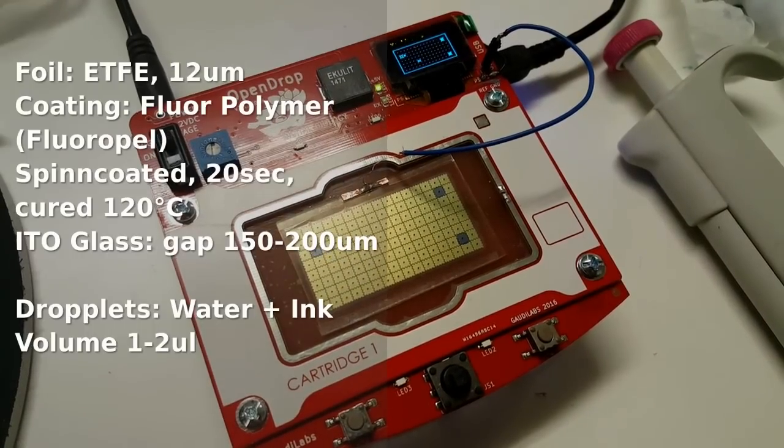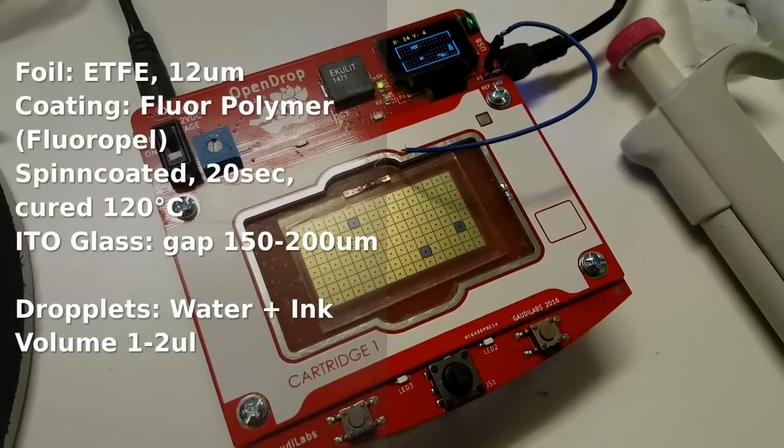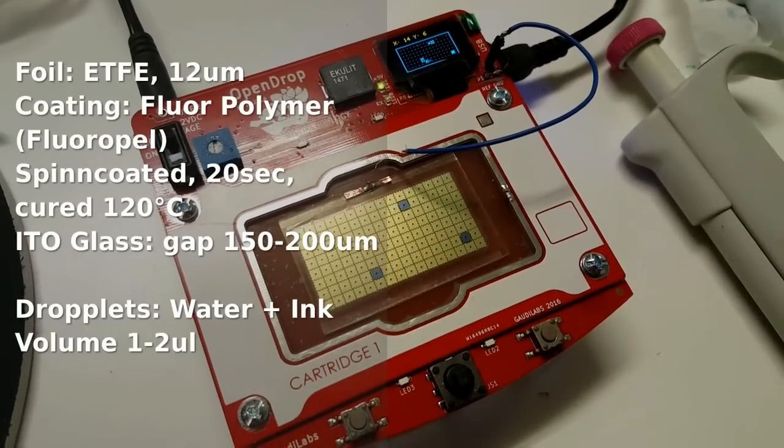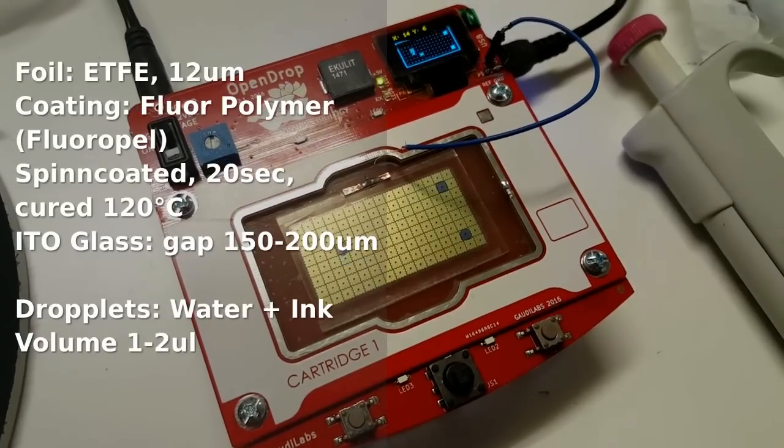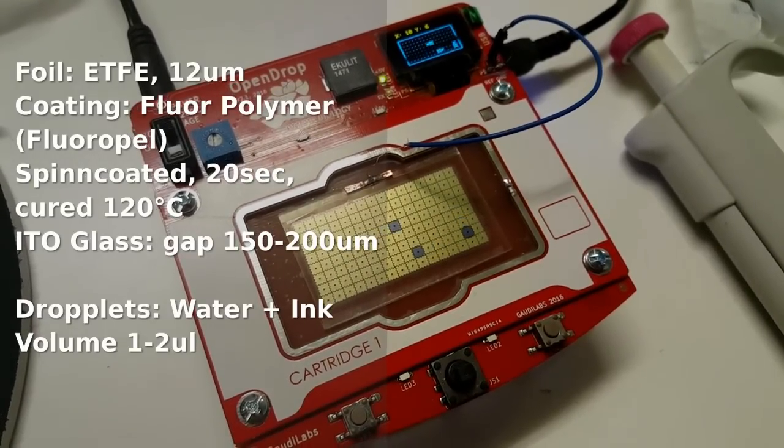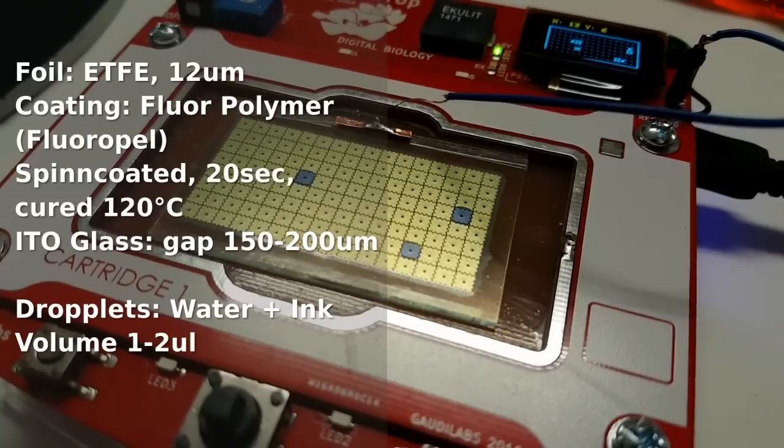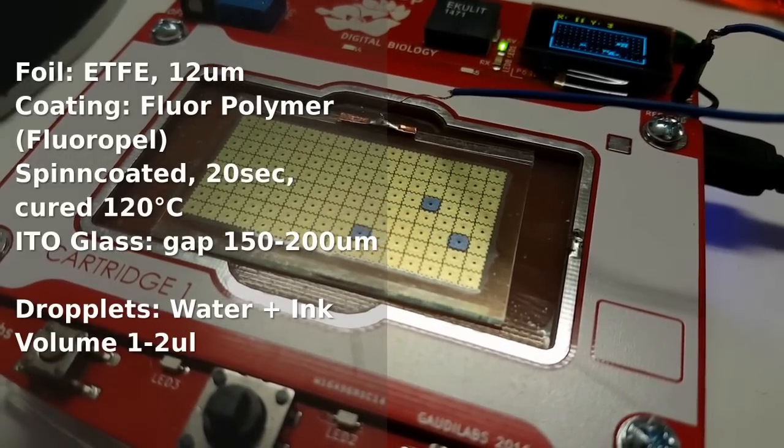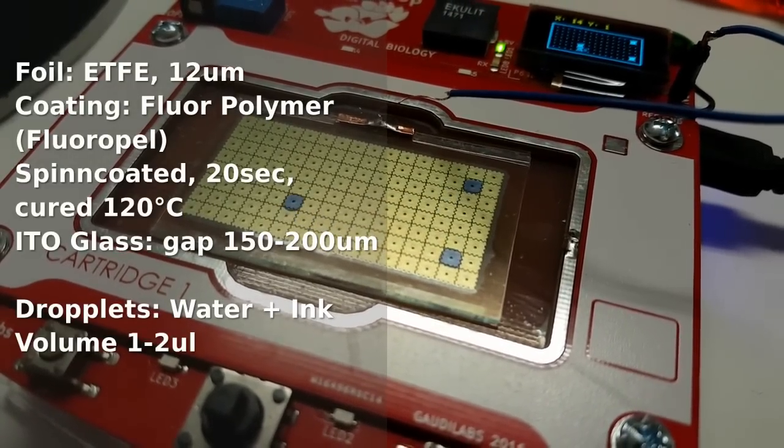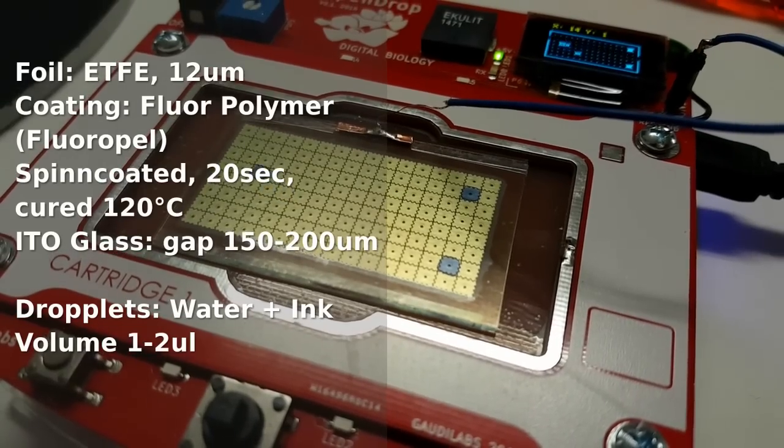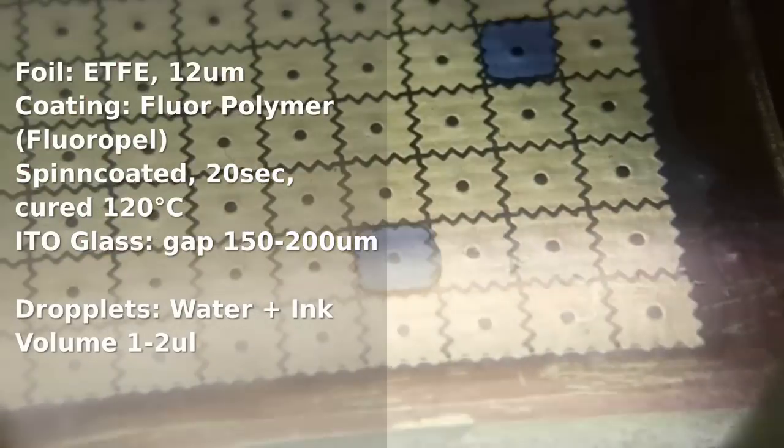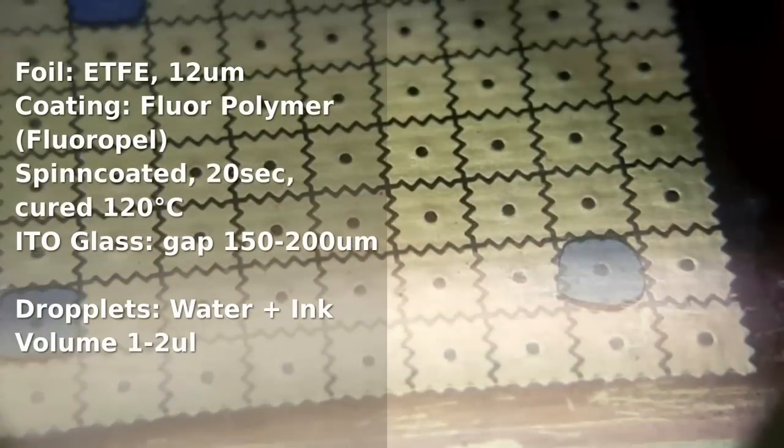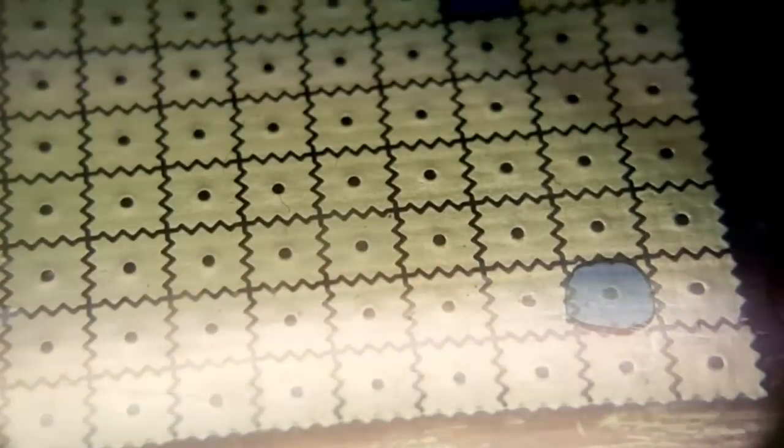The setup that I use in this video is a foil ETFE 12 micrometers coated with a fluoropolymer that I spin coat 20 seconds at about 4000 rpm, then cured at 120 degrees Celsius. The ITO glass is also coated with the same material and the gap for the liquid is about 0.2 millimeters, which gives a droplet volume of 1 to 2 microliters and I just use water and ink.